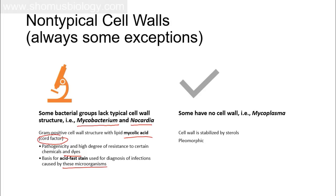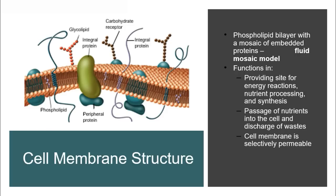Acid-fast staining is used to determine whether cell wall components are made of mycolic acid or cord factor. Some bacteria, like Mycoplasma, have no cell wall at all — their membrane is stabilized by sterols — yet they are equally dangerous infectious agents.